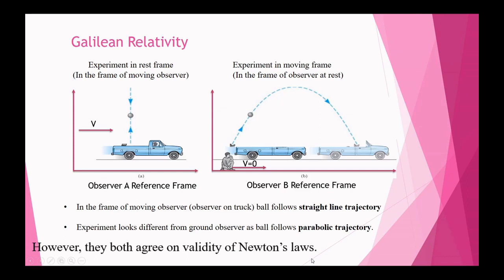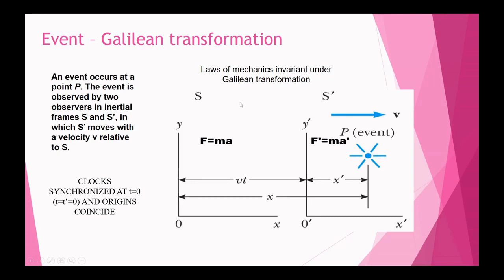Adding mathematics to Galilean transformation: we consider two reference frames S and S-dash. An event P occurs in S-dash and is observed from S. When S-dash was not in motion, O-dash coincided with O, and the clocks were synchronized at t = 0. Since motion is only in the x-direction, y = y' and t = t'. There is only variation in the x-direction, which we will transform further.